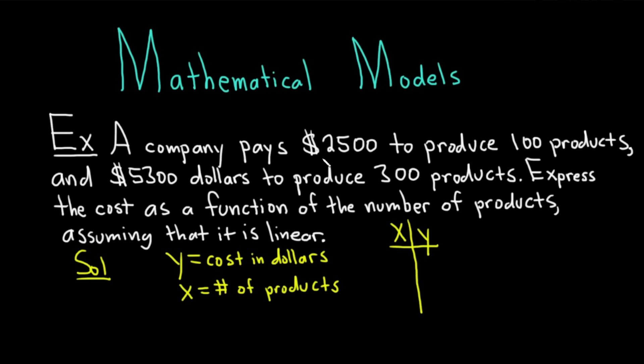And let's read the first piece of information. So they pay $2,500 to produce 100 products. That means x is 100 because x is the number of products. And y is 2,500 because y is the cost in dollars. Here it says $5,300 to produce 300 products. So again, x is 300 because it's the number of products. And then y is $5,300 because it's the cost in dollars.